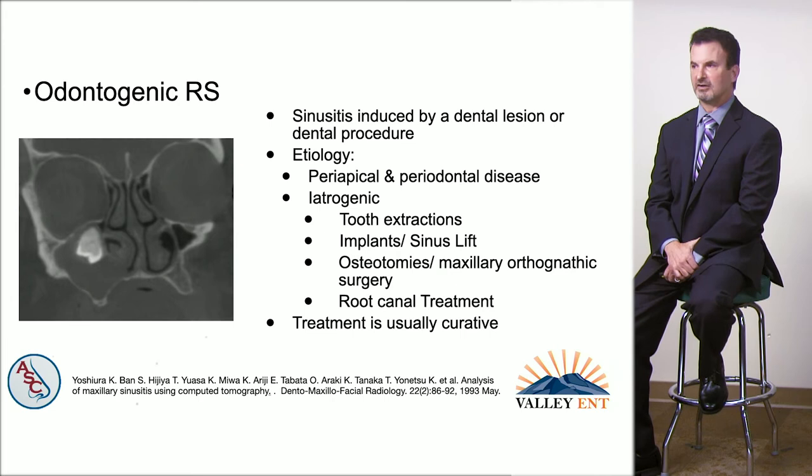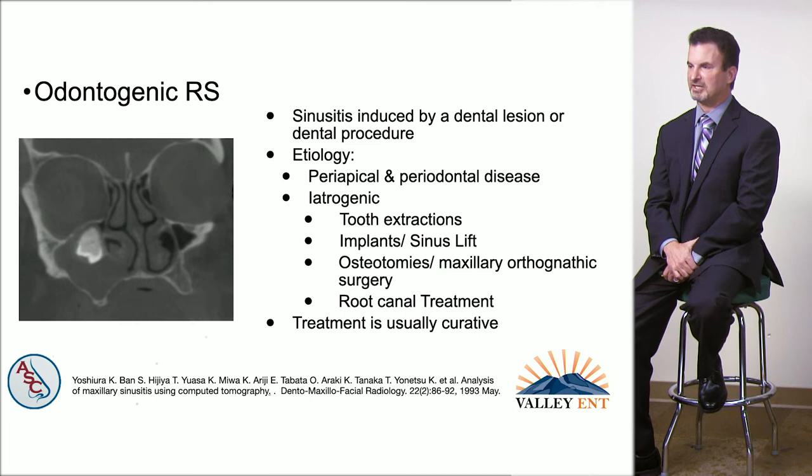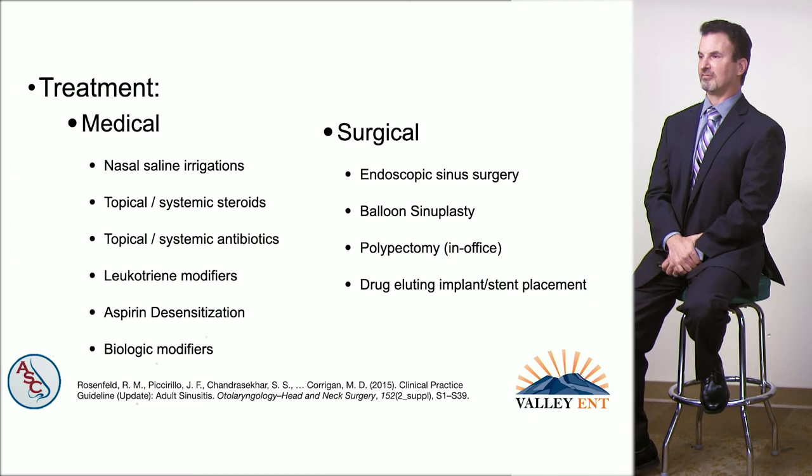The final comorbid condition is odontogenic rhinosinusitis — an often underdiagnosed condition where patients usually present with significant symptoms. It can be acute or chronic and is defined as sinusitis induced by a dental lesion or dental procedure. It's not always obvious, but one example is an ectopic tooth in the right maxillary sinus causing sinusitis. This is another form where surgical treatment is curative.